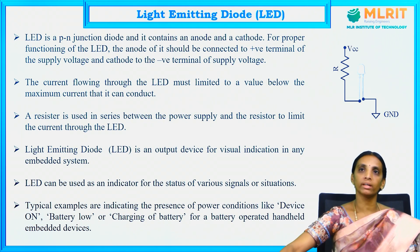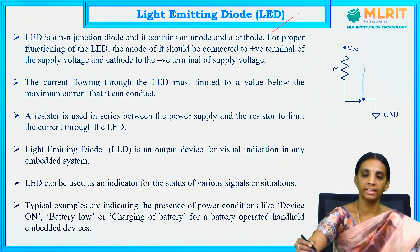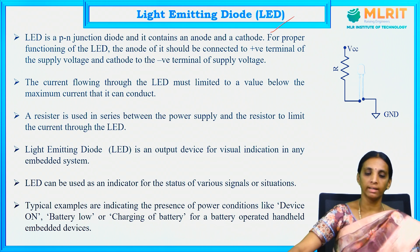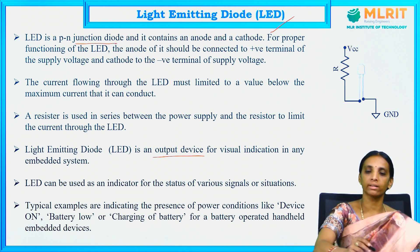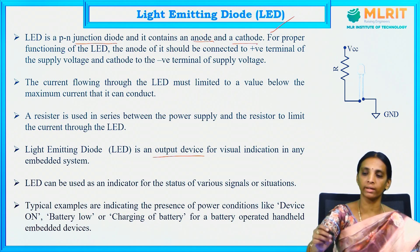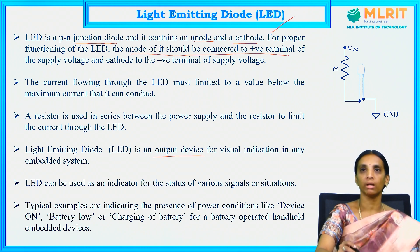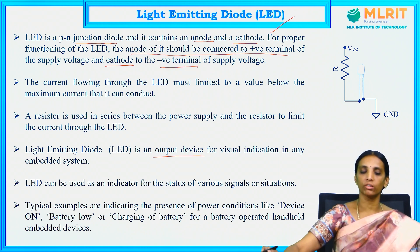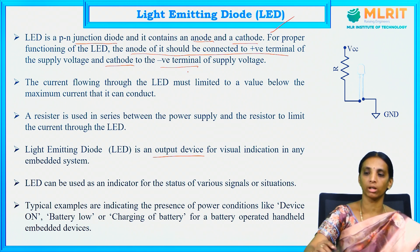The first device used as a sensor or actuator in embedded system design is the LED — Light Emitting Diode. It is an output device used in embedded systems as an actuator. It is basically a PN junction diode containing two terminals: anode and cathode. For proper functioning, the anode should be connected to the positive terminal and cathode to the negative terminal. The LED works only in forward bias condition.